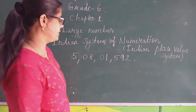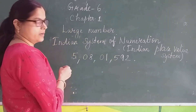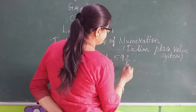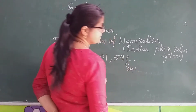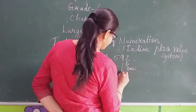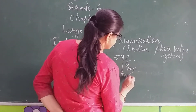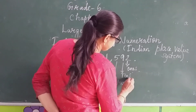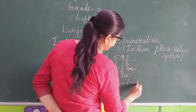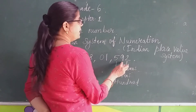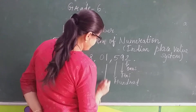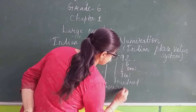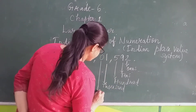In the Indian place value system, from the right you take the number. This 2 is in the ones place. This 9 is in the tens place. This 5 is in the hundreds place. And the next digit is in the thousands place.